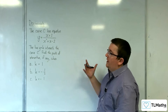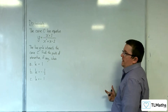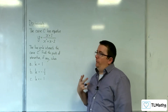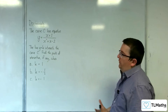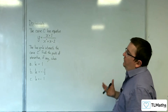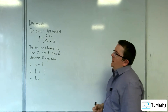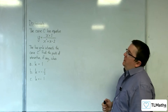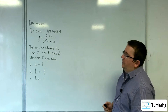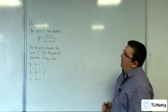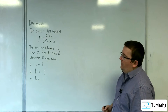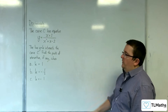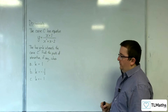In this video, we're going to take a look at this problem. The curve C has equation y equals x plus 3 over x squared plus x take away 2. The line y equals k intersects the curve C. Find the points of intersection, if any, when k equals 1, k equals minus 1 half, and k equals minus 1.